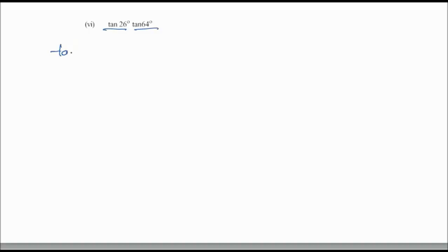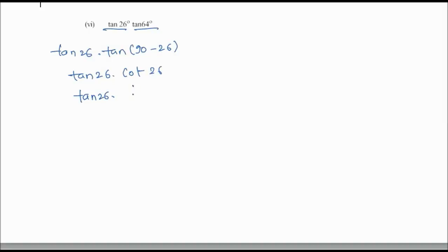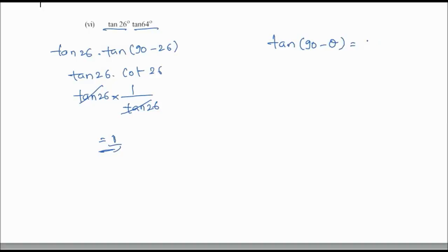Fifth question: tan 26° × tan 64°. We write tan 64° as tan(90° - 26°), which equals cot 26°. So tan 26° × cot 26° = tan 26° × (1/tan 26°). These cancel, giving 1. The formula used is tan(90° - θ) = cot θ.